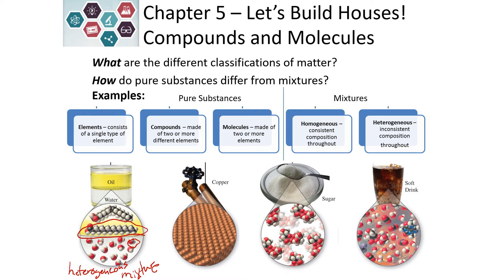How about copper? Copper is the same atom repeated over and over again, so that would make copper an element. Another way to tell is by looking at the periodic table, and copper can be found on the periodic table as Cu. Sugar — although they are more complicated compounds, sugar is the same compound repeated, so that makes this a pure substance. Because the different atoms are attached to each other and there are multiple of the same compound, this would be a pure substance and it would be a compound or a molecule.